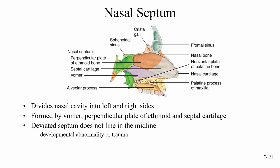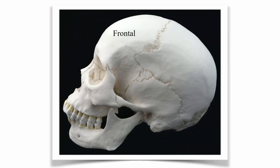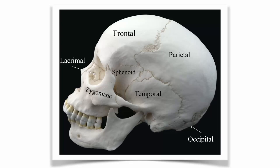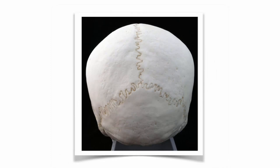Let's take a lateral view. We can see the frontal, the parietal, the temporal, the occipital, the sphenoid, the zygomatic, the lacrimal, the nasal, the maxilla, and the mandible. Looking at the back of the skull, again we have the two parietal bones and then the occipital bone.